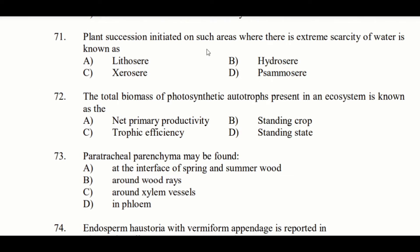First question: Plant succession initiated in an area where there is extreme scarcity of water is known as — Option A: Lithosere, Option B: Hydrosere, Option C: Xerosere, Option D: Samosere. The answer is Option C: Xerosere. Plant succession in an area of extreme scarcity of water is called Xerosere.